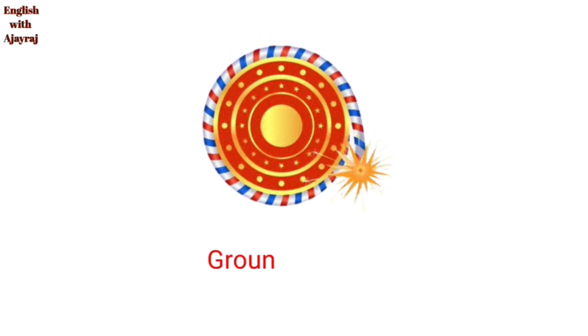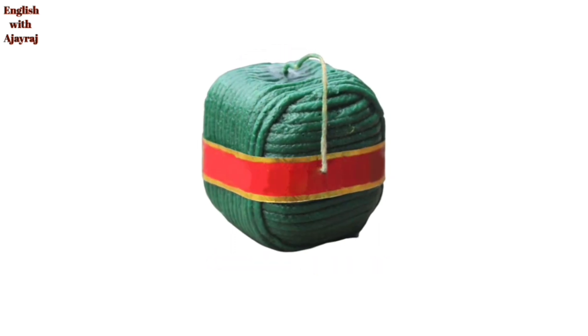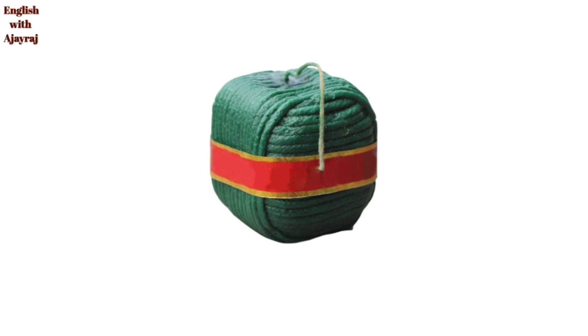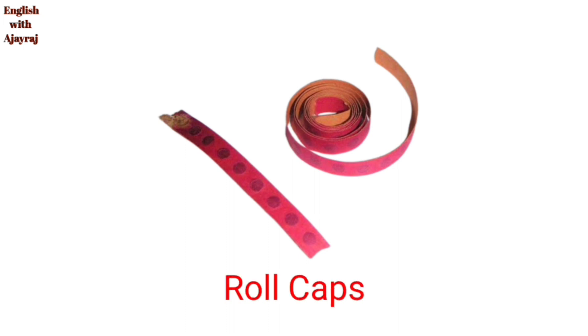This one is a ground spinner. The big one — this one is called sutli bomb. These are for kids and these are called roll caps.